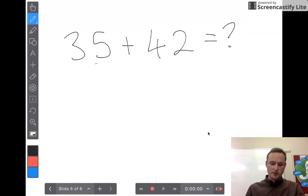I'm going to start with my ones units. I've got a 5 and a 2. I'm going to rewrite the question: 5 plus 2 equals. Seems much easier now, doesn't it? Equals 7.